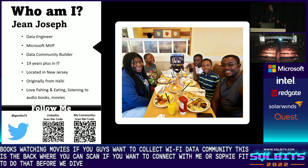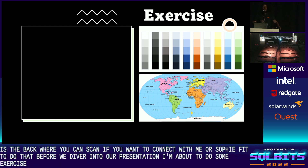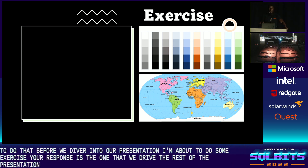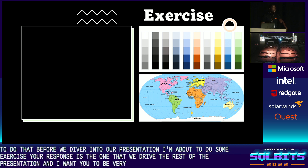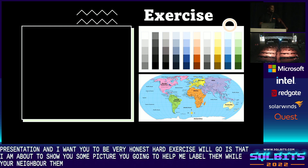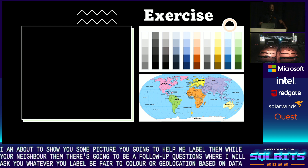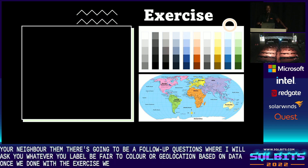Before we dive into our presentation, I'm about to do some exercise. Your response is the one that will drive the rest of the presentation, and I want you to be very honest. How the exercise will go is that I am about to show you some pictures. You're going to help me label them, and there will be a follow-up question asking if whatever you label refers to color or geolocation. Once we're done with the exercise, we're going to dive into our main topic.